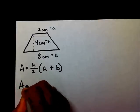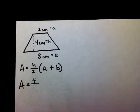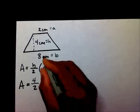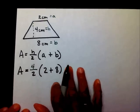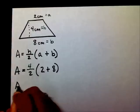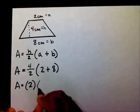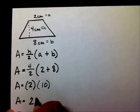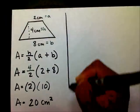So, I have a equals my height is 4, divided by 2, times my a is 2, plus my b is 8. So, I'm going to divide 4 divided by 2. Well, that's going to be 2. And what is 2 plus 8? That's going to give you 10. And, therefore, 2 times 10 is 20 centimeters squared.